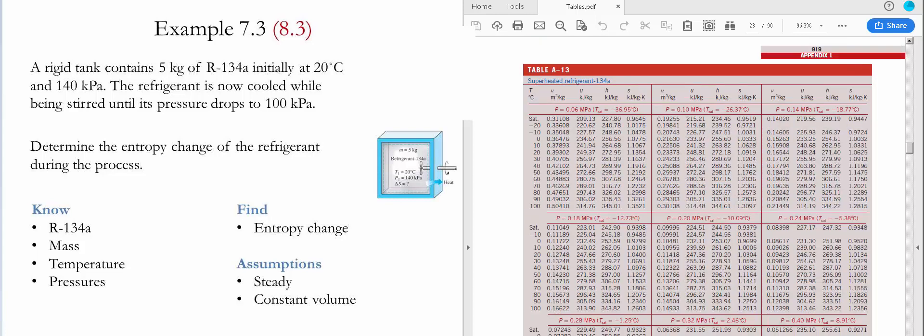Now that we've determined the beginning state of the process is a superheated vapor, we go to table A13. We go to a pressure of 0.14 megapascals and a temperature of 20 Celsius.